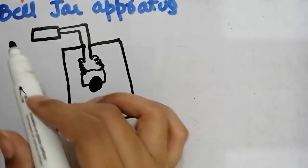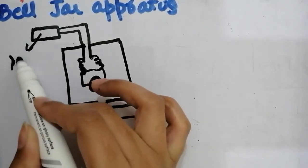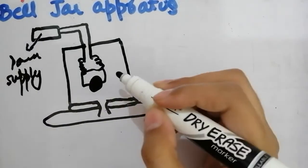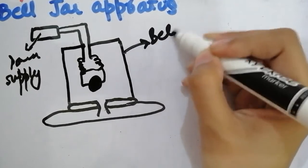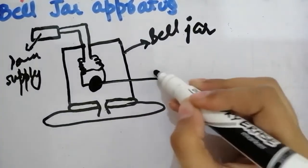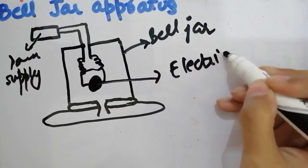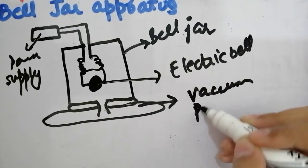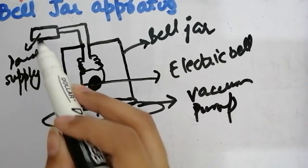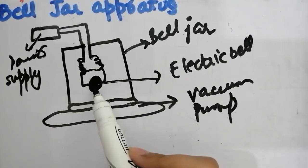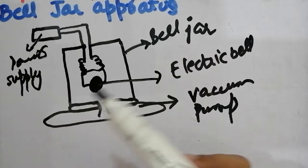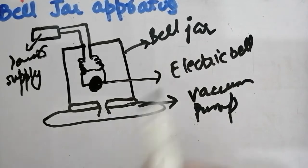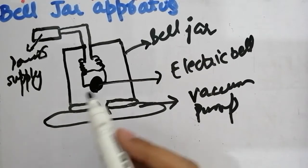Now, students, what do we do? The power supply is turned on. The jar is filled with air, and when the power supply is switched on, this electric bell will start ringing and we can hear it.